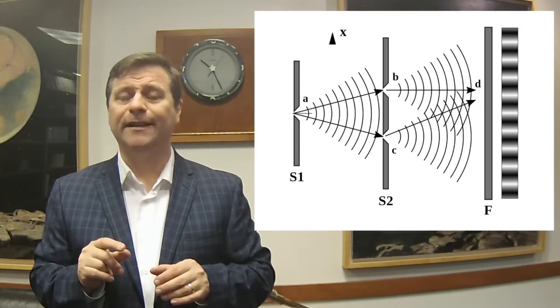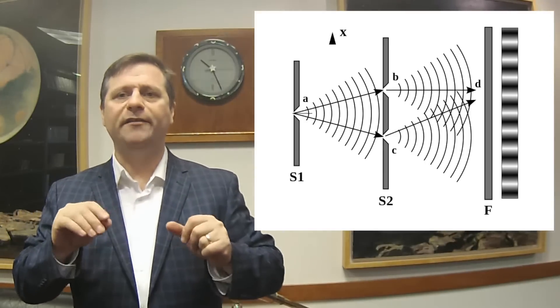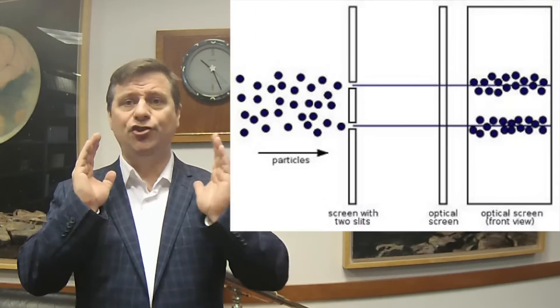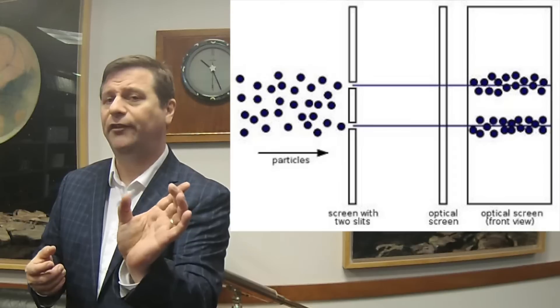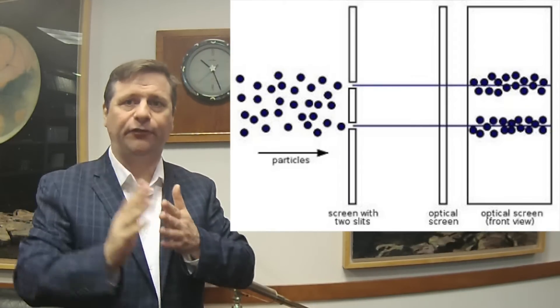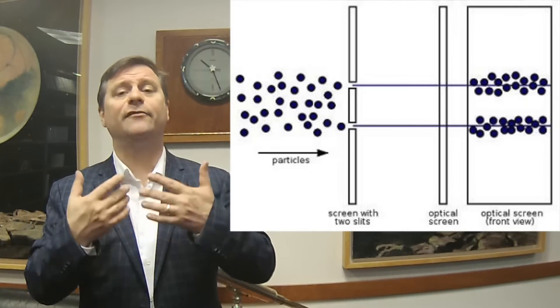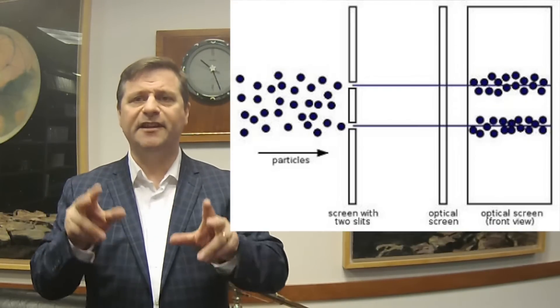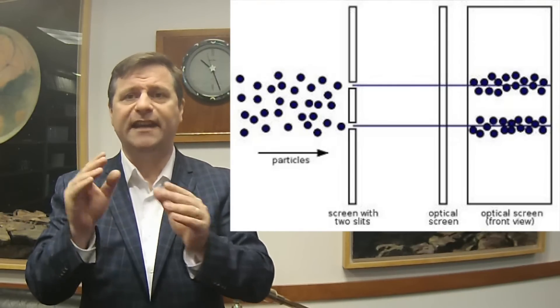When light approaches the two slits, all the light gets blocked except through those two vertical slits. On the other side of the barrier, the two slits act like point sources or vertical line sources. If Newton's corpuscular theory were correct — corpuscles being like bullets traveling in straight lines — then this experiment should show two spots on the far side, roughly the same diameter as the two slits. Maybe a little spread due to randomness, but only two spots.